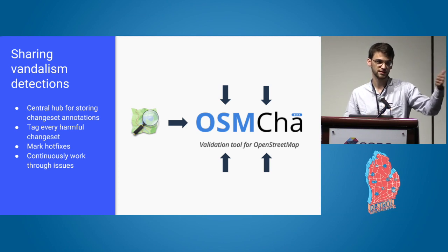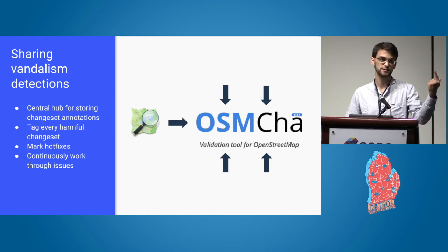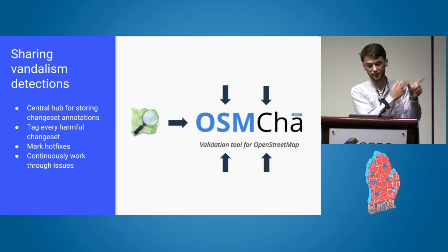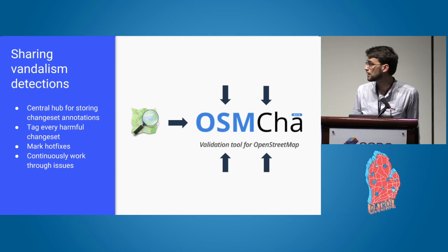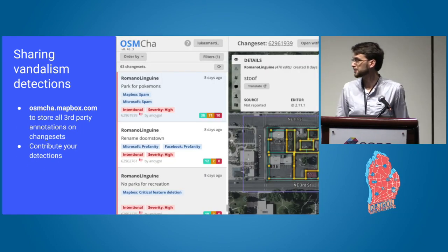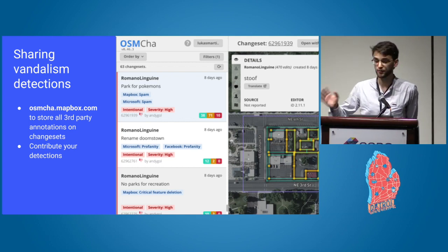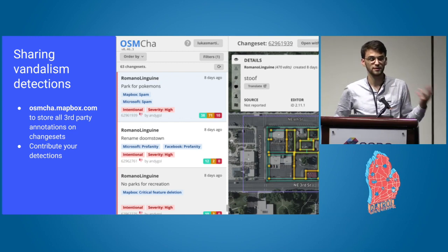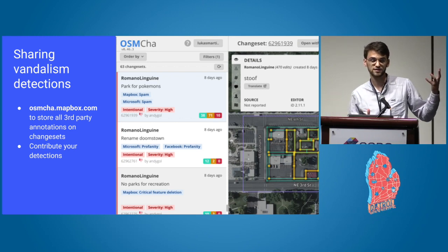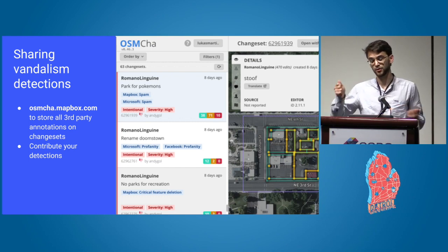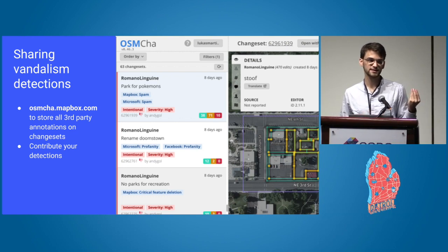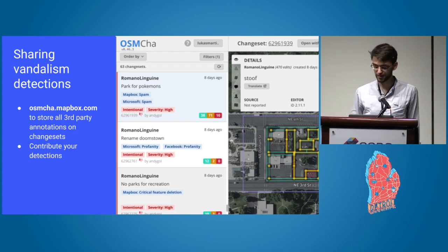This would mean having a central hub — that could be OSM.cha — where we tag harmful changesets and also tag hotfixes for those changesets. With these two pieces of information, we can continuously go through and fix issues and everyone can know about them. In OSM.cha, everyone can post detections to a changeset: Mapbox flagged something, Facebook detected profanity, Microsoft found road errors, Apple found consistency errors, Telenav found a one-way restriction. If all these harmful detections, when they have high confidence, are stored somewhere, we can together give that a thumbs down and mark it as bad.